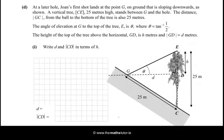And now, at a later hole, Joan's first shot lands at the point G, on ground that is sloping downwards, as shown. A vertical tree, CE, 25 metres high, stands between G and the hole. The distance, GC, from the ball to the bottom of the tree is also 25 metres. The angle of elevation at G to the top of the tree, E, is θ, where θ = tan⁻¹(1/2).